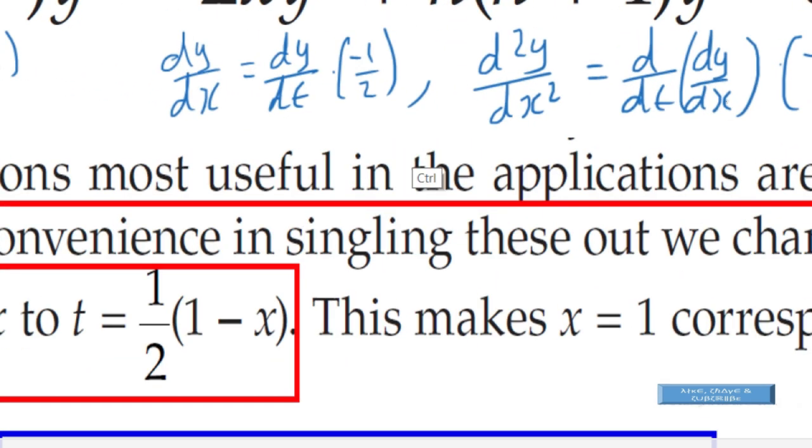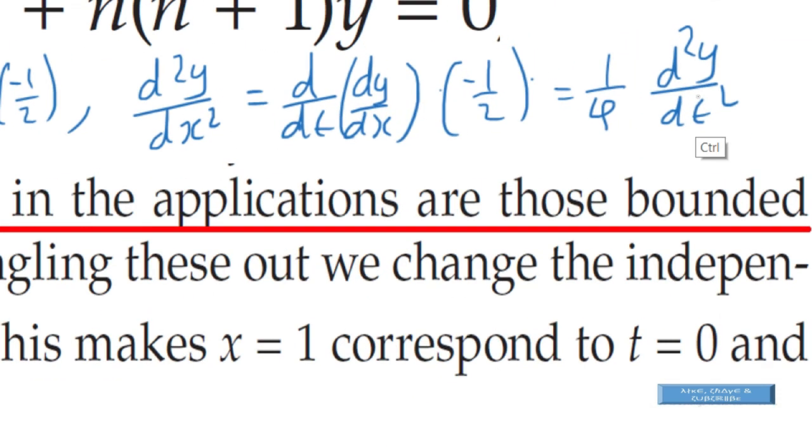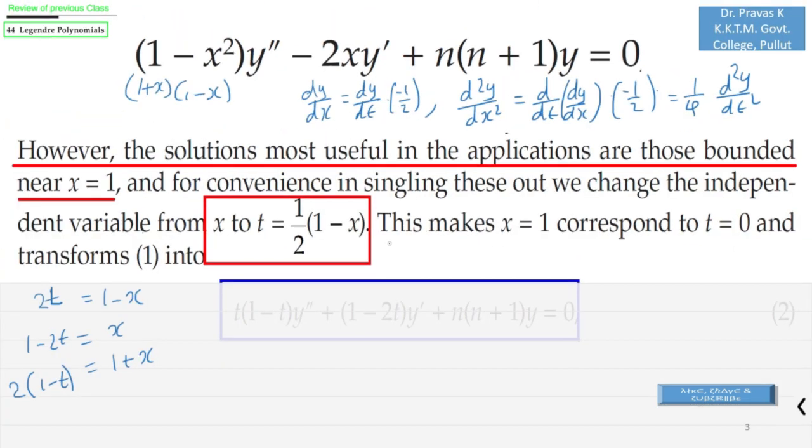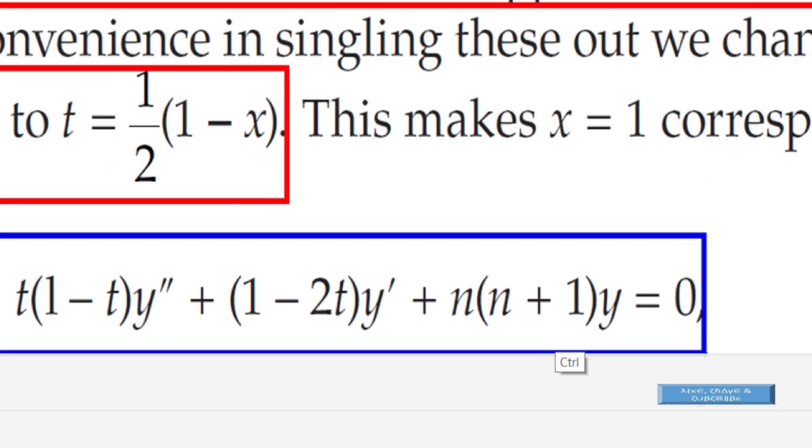That is, t(1-t)y'' + (1-2t)y' + n(n+1)y = 0. Now we can see that this is in the standard form of a Gauss hypergeometric equation.